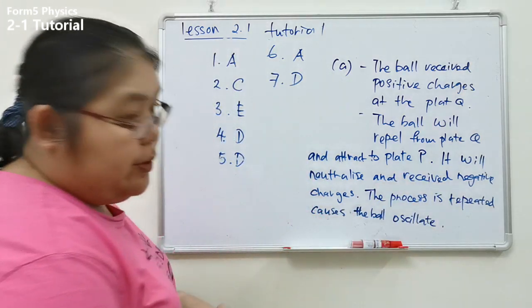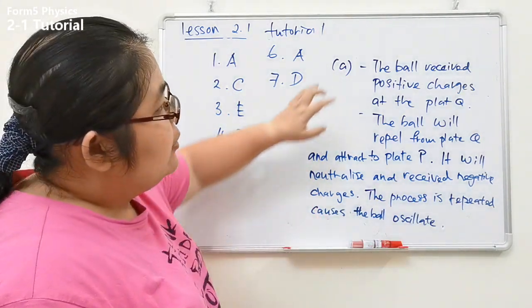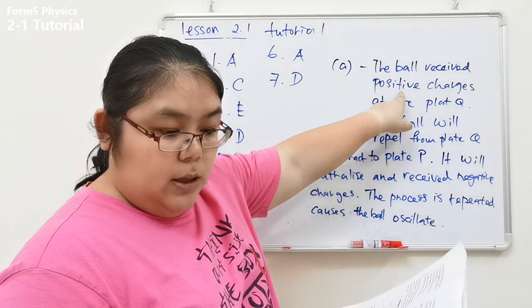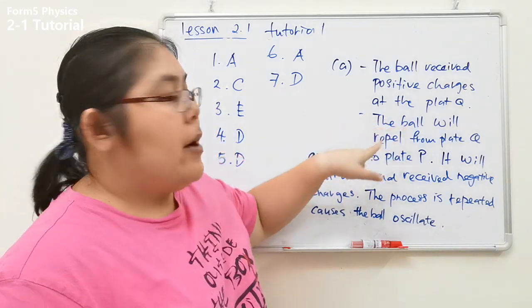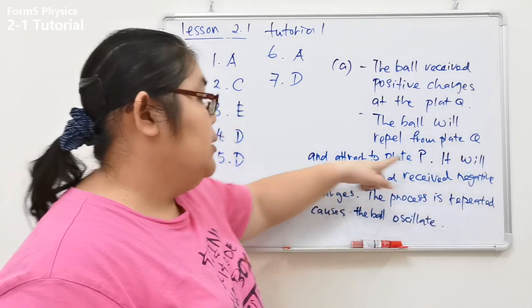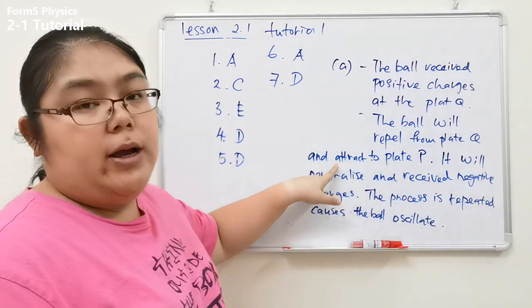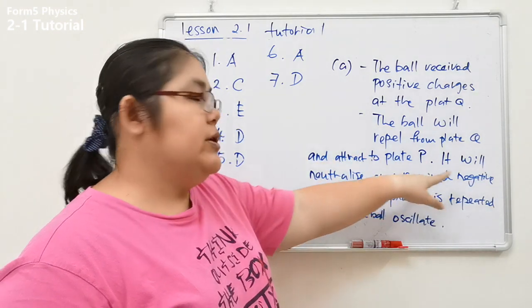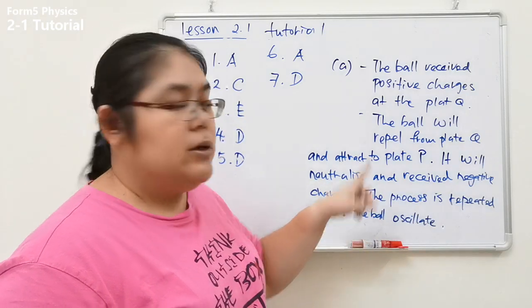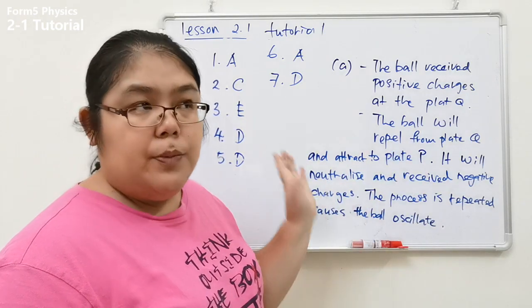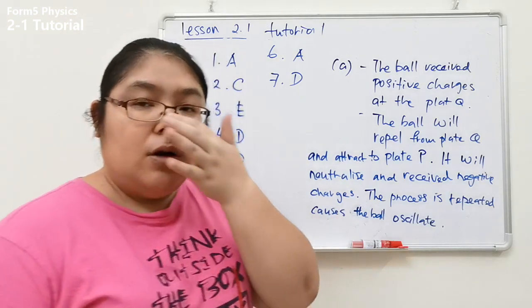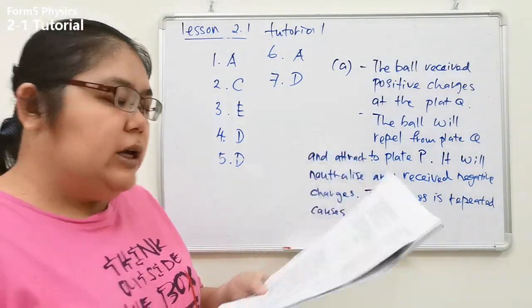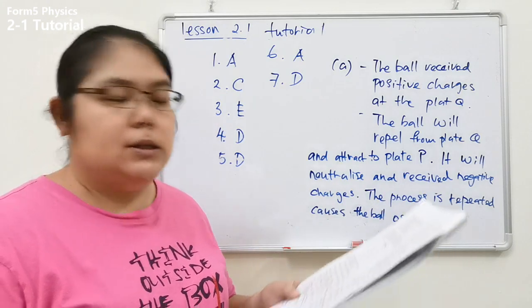To summarize: the ball receives positive charge at the positive plate, then repels from plate Q and goes to plate P due to attraction. It neutralizes there and receives negative charge, then repels again. This process repeats and the ball oscillates between the two plates. That is the first answer. The second part asks for two suggestions on how to increase the speed of the ball.